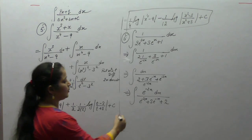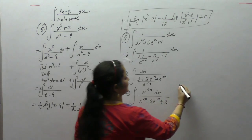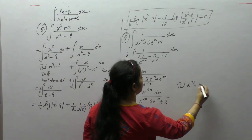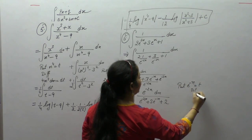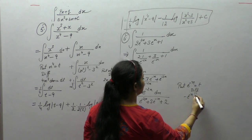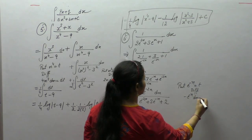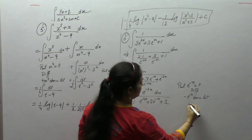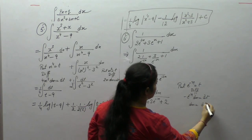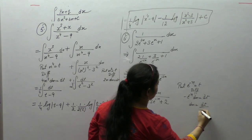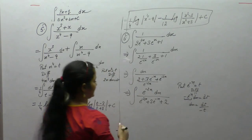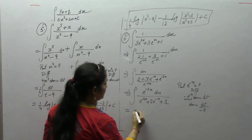Now put E^(-x) as t. The derivative of E^(-x) is minus E^(-x), so dx is dt upon minus t. We substitute E^(-x) as t throughout.